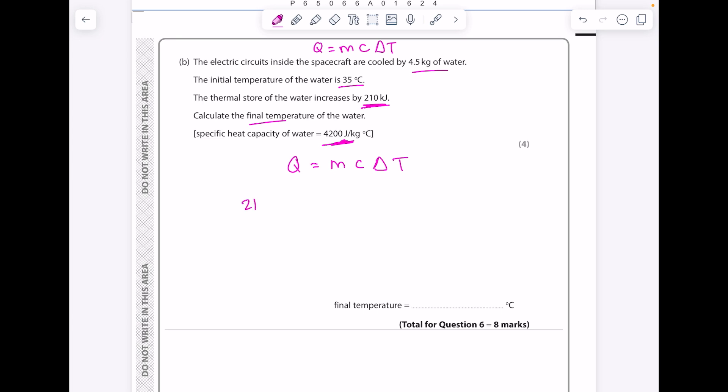The mass we've been told is 4.5 kg, the specific heat capacity is 4200, we're after the final temperature so we'll need to find the change in temperature in order to do that. Just simplify the right hand side and then divide both sides by 18,900 to solve. So our change in temperature is 11.1 degrees Celsius. We've been told that the initial temperature was 35 degrees, we know that the thermal store increases which means the temperature increases, so the final temperature must be 35 plus 11.1 to get 46.1 as your final answer.